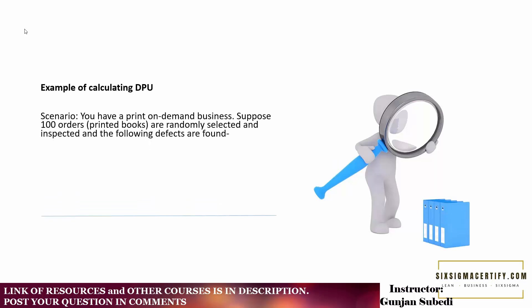There is a scenario where you have a print on demand business similar to KDP. Let's suppose 100 orders or printed books are randomly selected and inspected and you got the following defects: you got two defects where the defect was missing out of the print, two have typos, and one has the damaged cover.